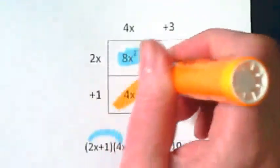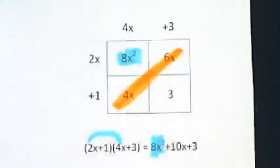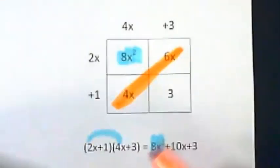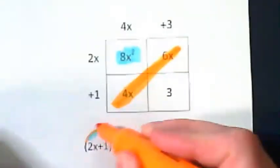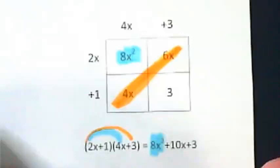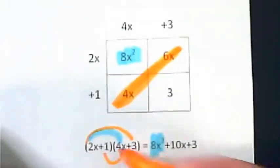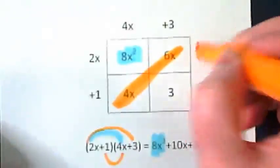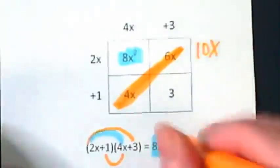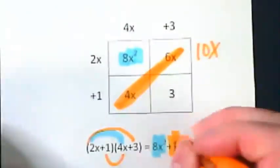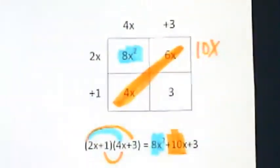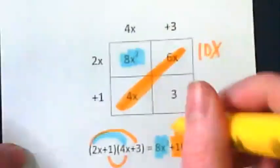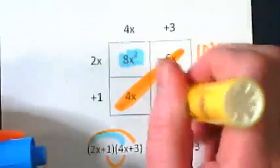Okay, then we have our 6x and our 4x that are like terms. They come from 2x times 3, 1 times 4x, and when their like terms are combined, they are positive 10x, and then finally what's left is our constant of 3, which comes from 1 times 3.